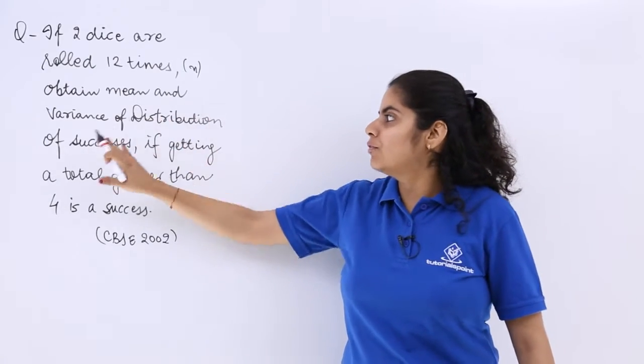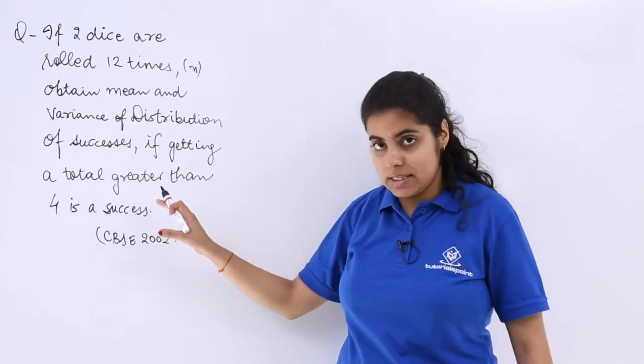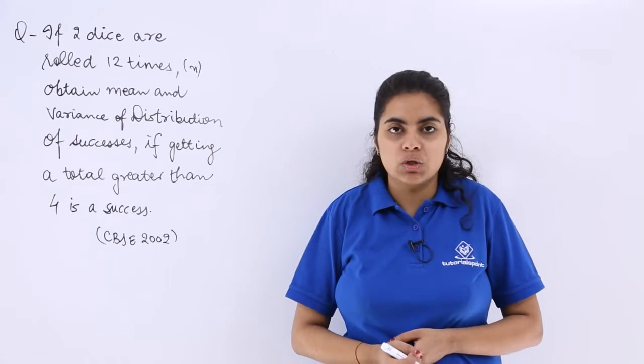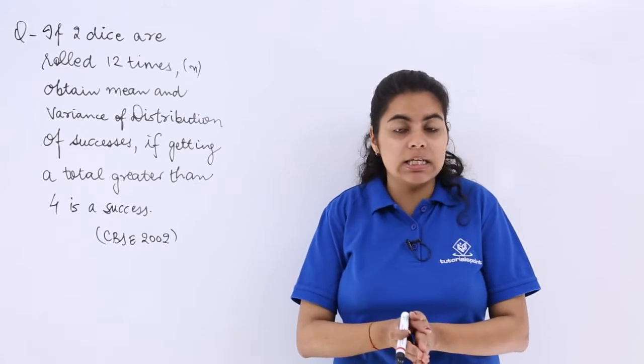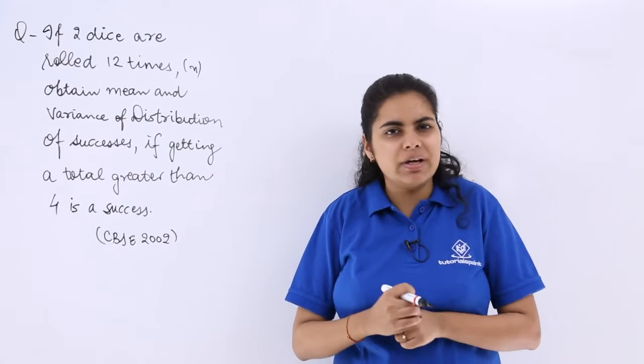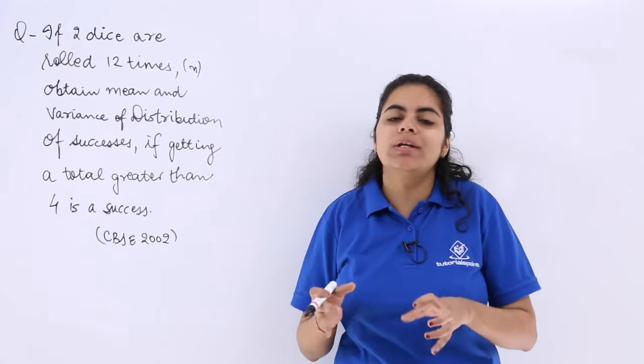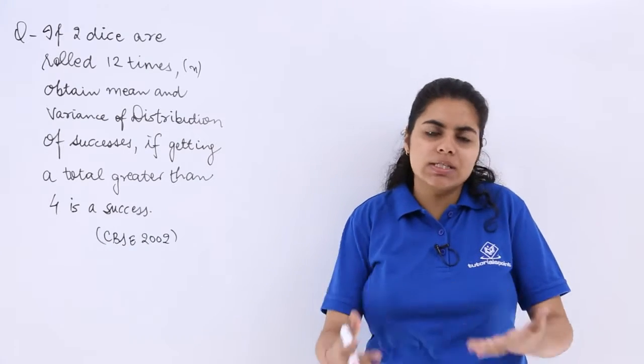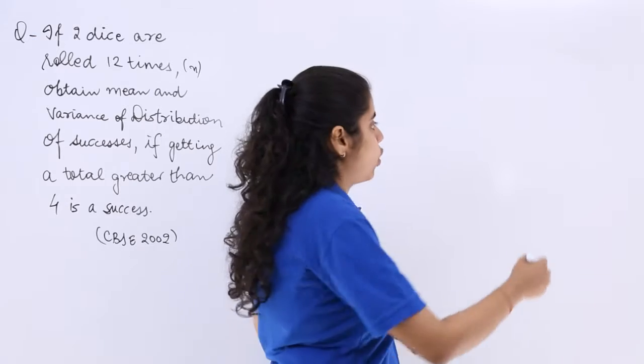Right. Obtain the mean and variance of the distribution of successes if getting a total greater than 4 is a success. So there are many cases in which you get the total as greater than 4, and if getting a total greater than 4 is a success, how can we see the sample space accordingly?